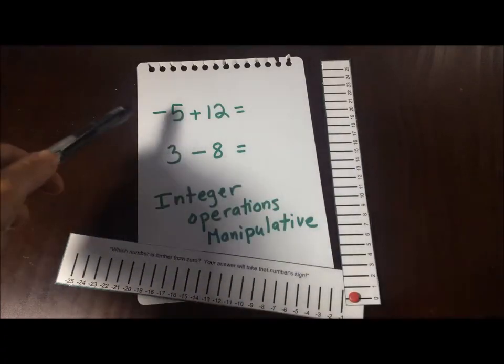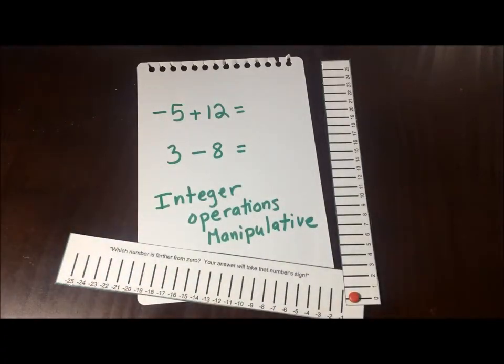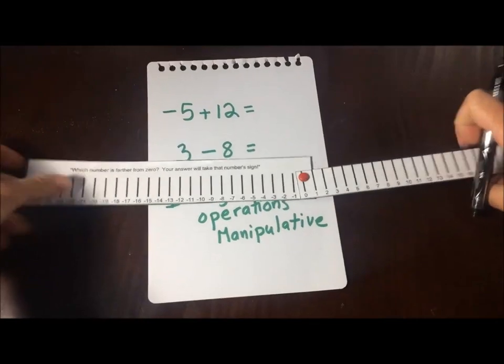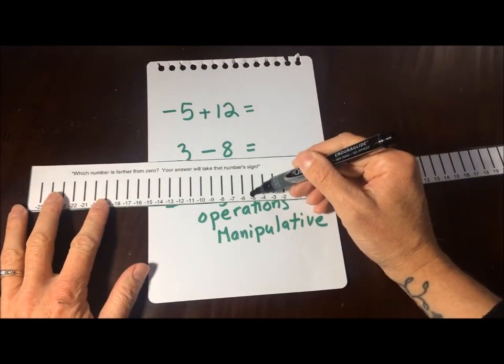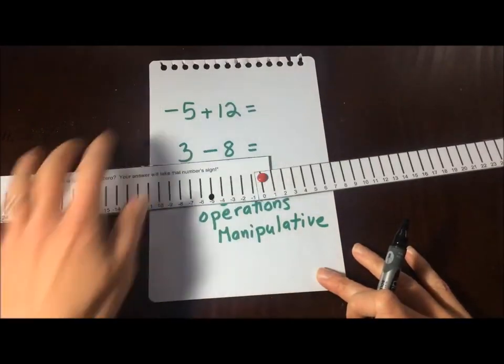So let's get into some examples. Say negative 5 plus 12. What you'd do is you'd find negative 5 on the ruler, and you'd find 12 on the ruler.